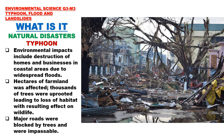Environmental impacts include destruction of homes and businesses in coastal areas due to widespread floods, hectares of farmland affected, thousands of trees uprooted leading to loss of habitat with resulting effects on wildlife, and major roads blocked by trees and debris, making them impassable.